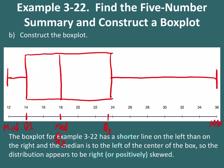The box plot for this example has a shorter line on the left than on the right. Also, the median is to the left of the center of the box, so the distribution appears to be right or positively skewed.